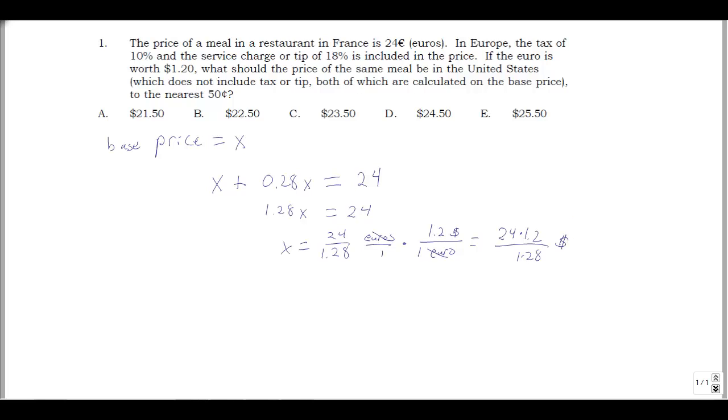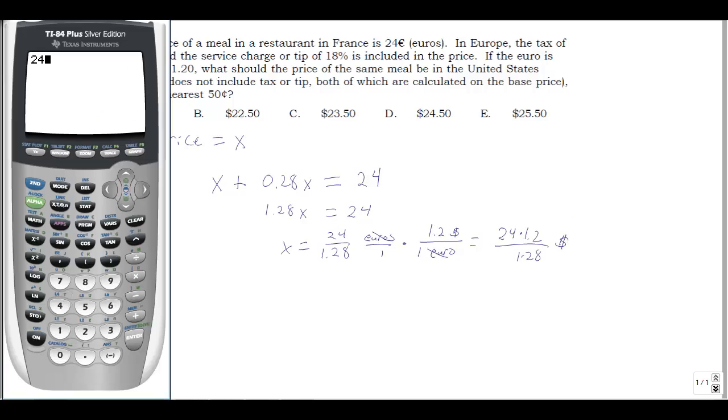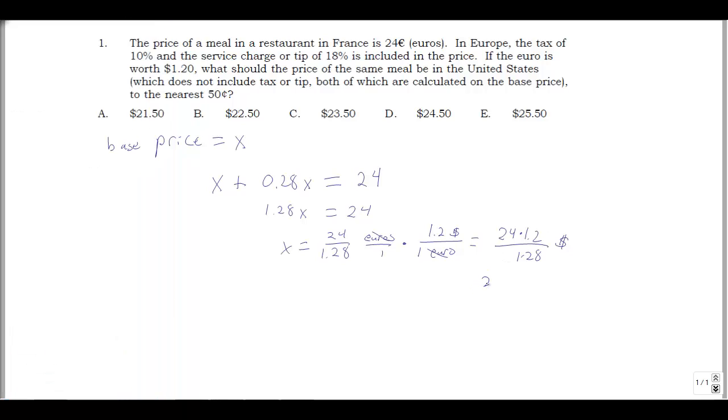That's how much this should cost here. So let's just do the calculation. 24 times 1.2 divided by 1.28. And it tells us it should be 22.50. So we expect an answer of 22.50. That's our answer. And that looks like it's answer D. So we pick D, 22.50.